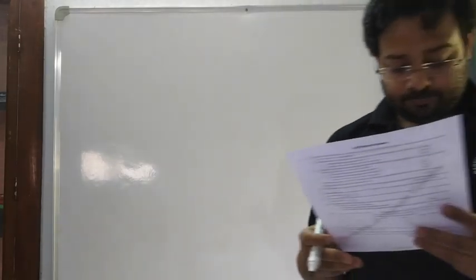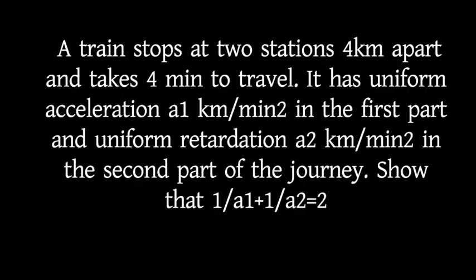Question number 18. A train stops at two stations 4 km apart and takes 4 minutes to travel. It has uniform acceleration a1 km per minute squared in the first part, and uniform retardation a2 km per minute squared in the second part of the journey. Show that 1 by a1 plus 1 by a2 equals 4.